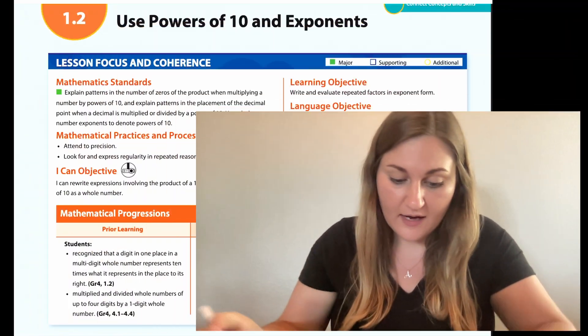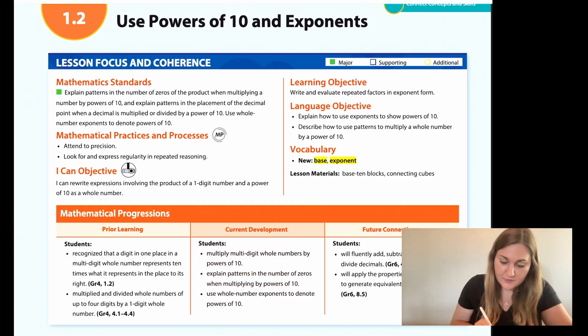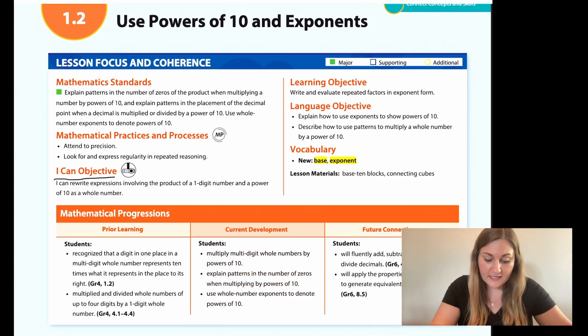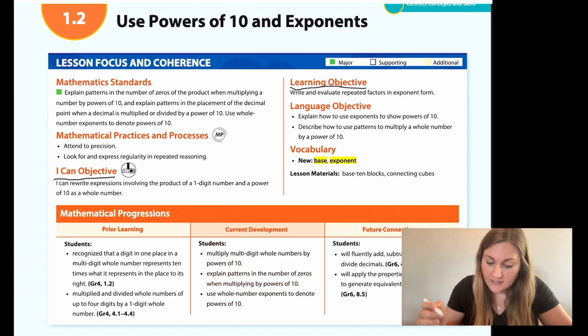Hi, I'm Natalie Rhodes, and this is IntoMath's 5th grade, Module 1, Lesson 2. I want to start off going over the ICAN objective found here. I can rewrite expressions involving the product of a one-digit number and a power of 10 as a whole number. And the learning objective is write and evaluate repeated factors in exponent form.